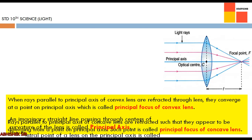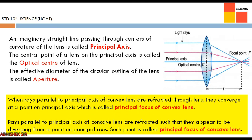The principal axis is an imaginary straight line passing through the center of curvature of the lens. The optical center is the central point of a lens on the principal axis — similar to the concept of pole in mirrors, but for lenses it is called optical center. Aperture is the effective diameter of the circular outline of the lens, essentially the diameter of the lens.